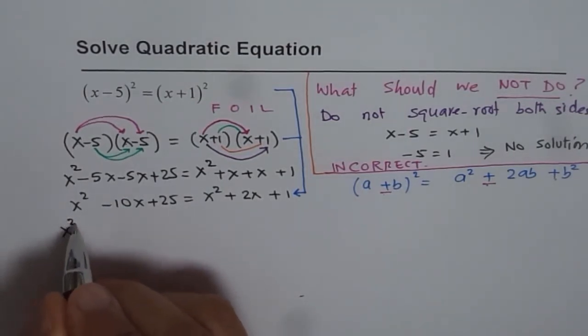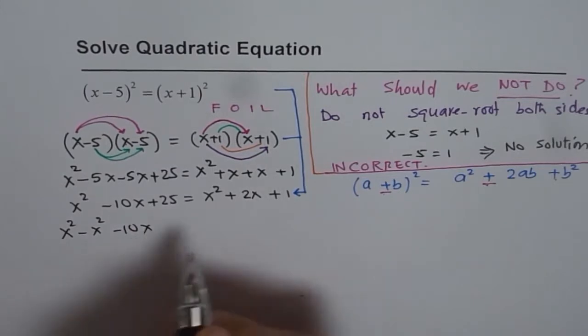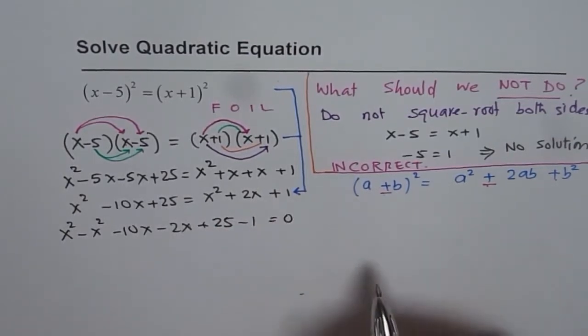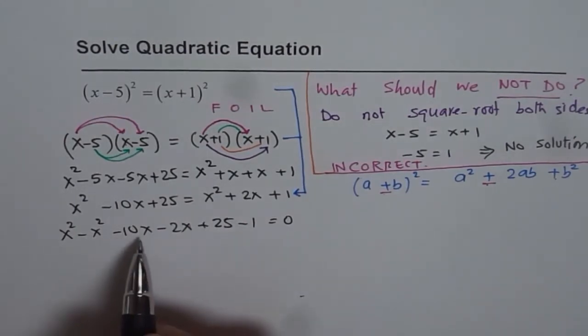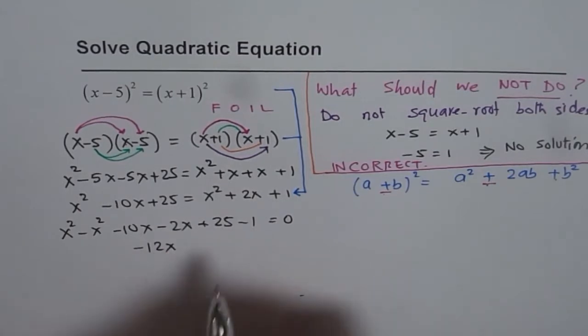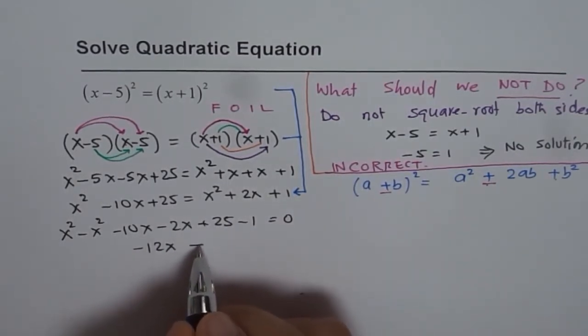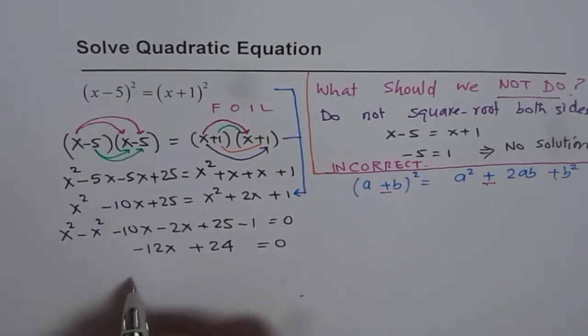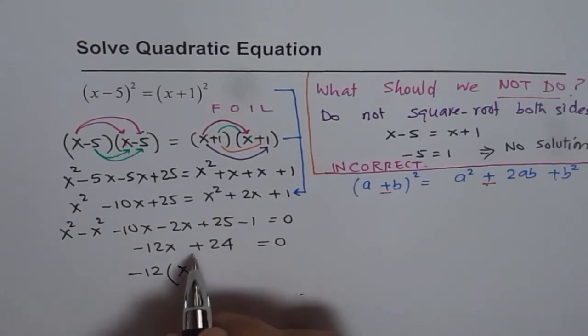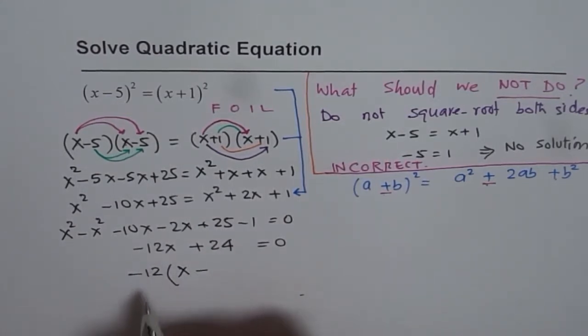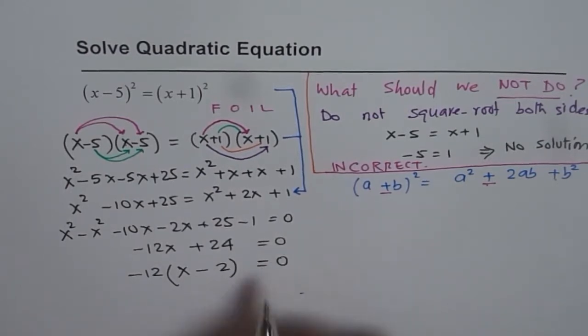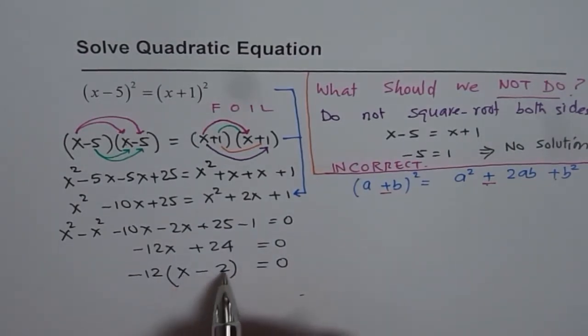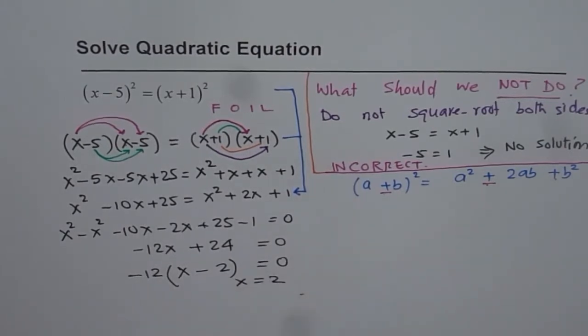Now let's bring all the terms together and solve. x squared minus x squared is 0, minus 10x minus 2x gives us minus 12x, and 25 minus 1 is 24. So we have minus 12x plus 24 equals 0. Taking minus 12 as common, we get minus 12 times x minus 2 equals 0. So the solution is x equals 2. We do get a solution here.